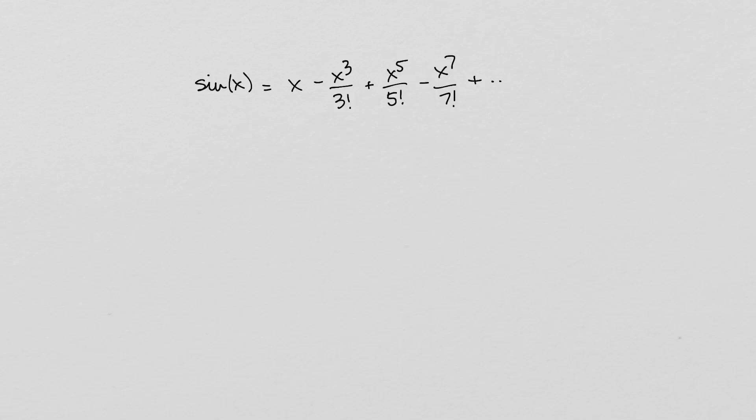For example, if we use the first two terms in the Taylor series of the sine function to approximate sine of 0.1 as 0.1 minus 0.1 cubed over 6, then the difference between our result and the actual value of sine of 0.1 is truncation error.